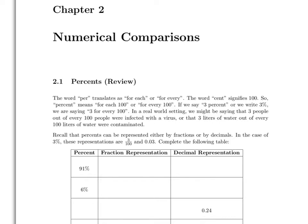We start with a review of percentages. The word 'per' translates as 'for each' or 'for every'. The word 'cent' signifies 100, so percent means for each 100 or for every 100.